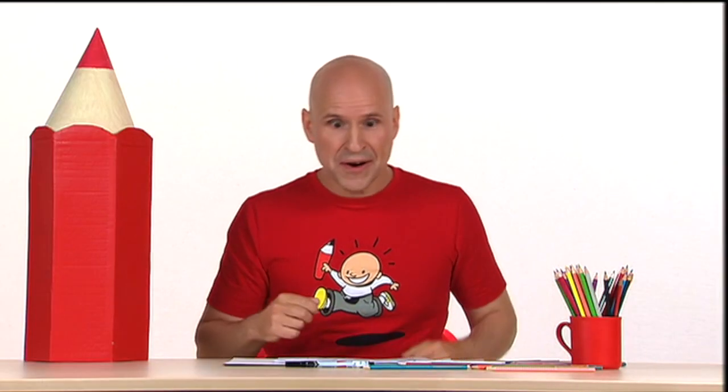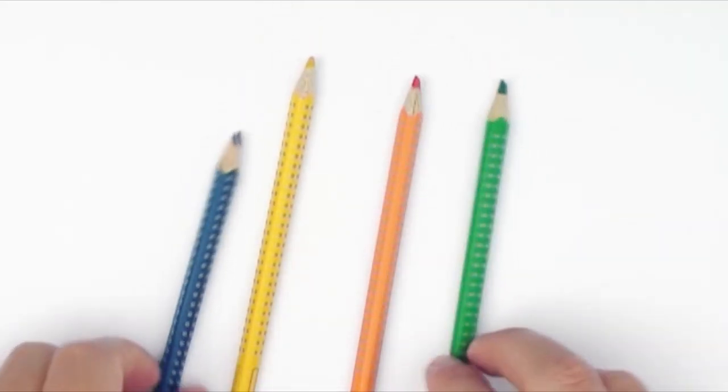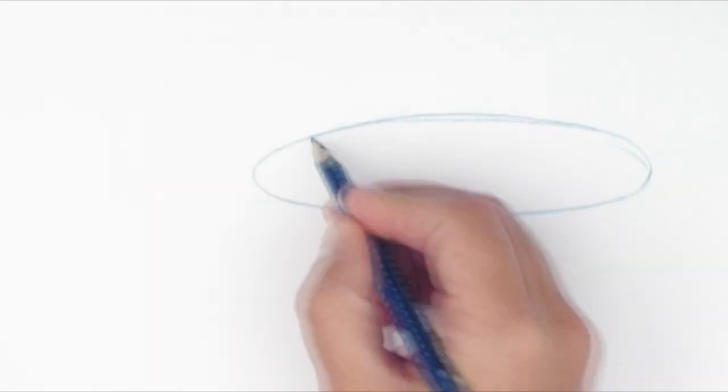All right. I start with choosing my colors. Blue, yellow, green and orange. Then I draw a rounded shape almost like a cucumber that lies on the table.